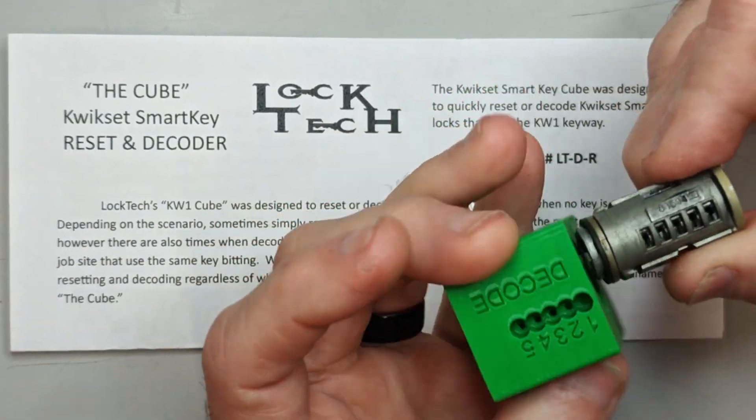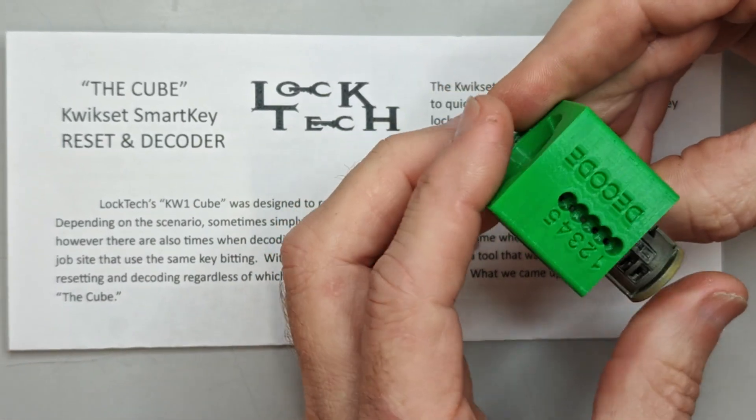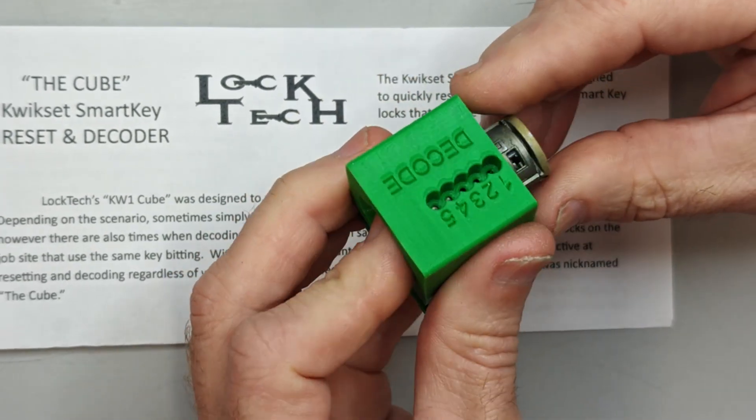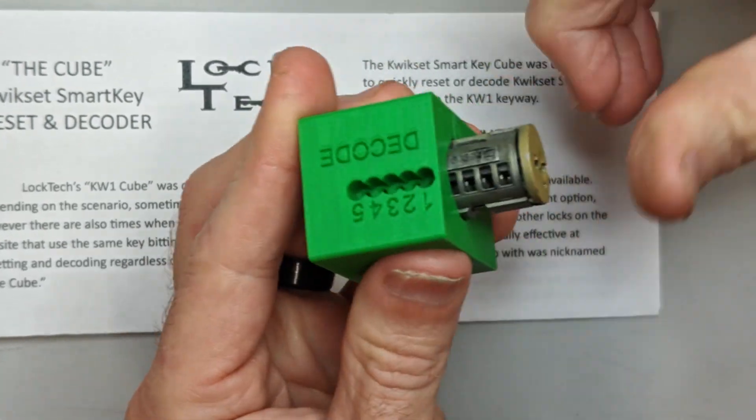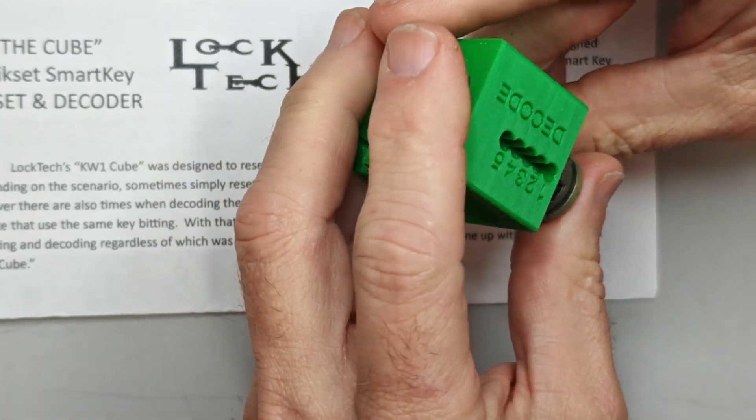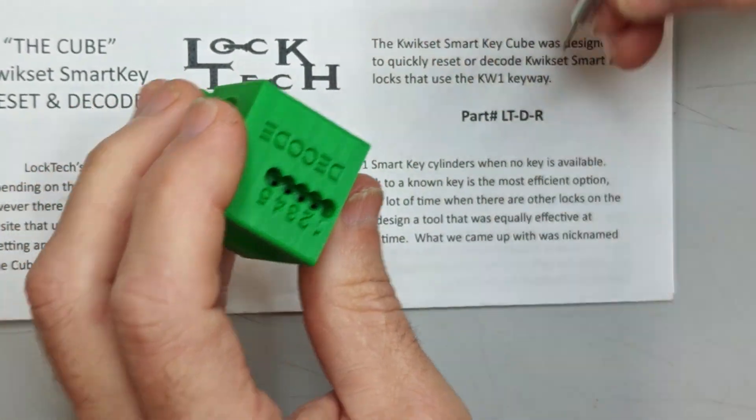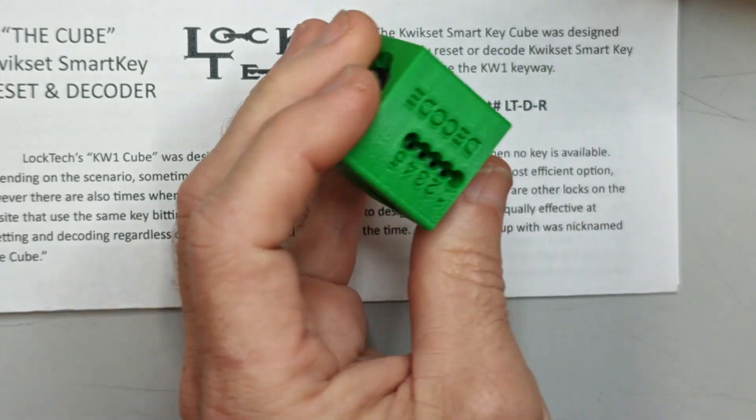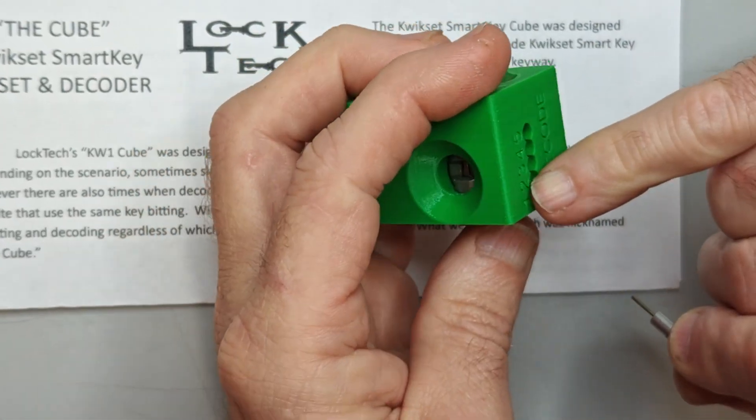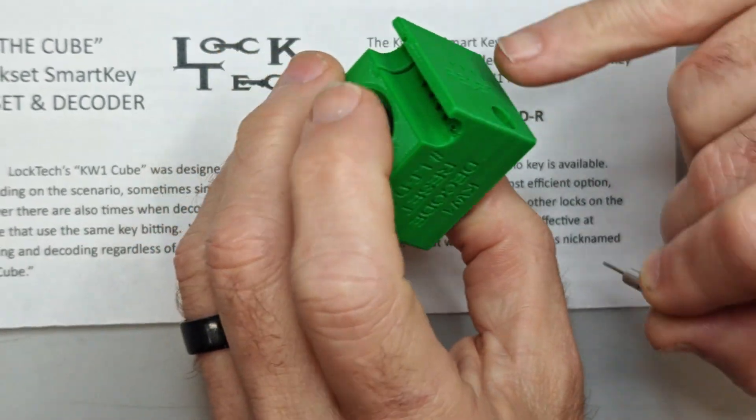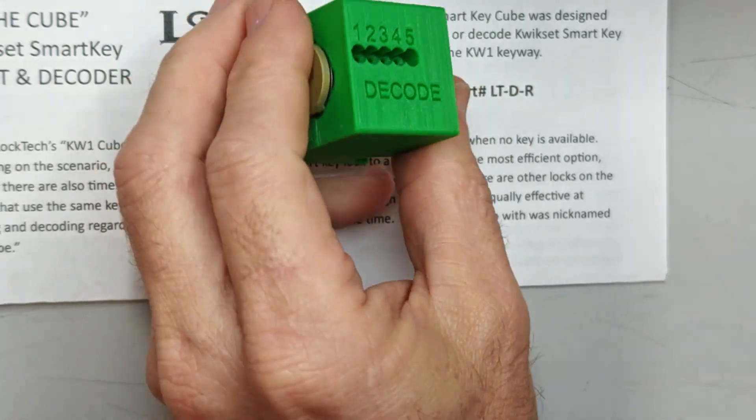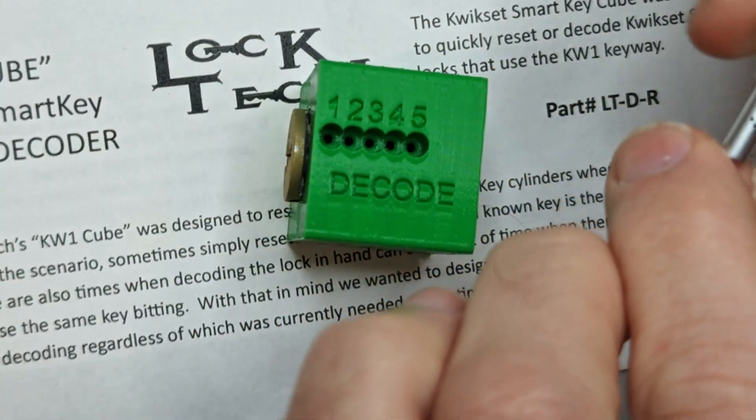Go ahead and insert the cylinder into the body. It's only going to go one way fully. It could go other ways but won't go fully into the case. Snap it in there. We're going to take the probe and put it on the decode side. You have one through five for your spacing. On this side you have reset side, we'll get to that shortly.